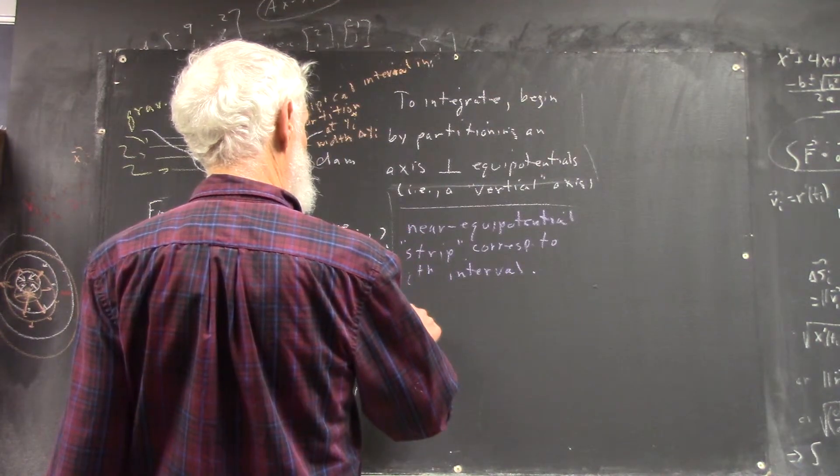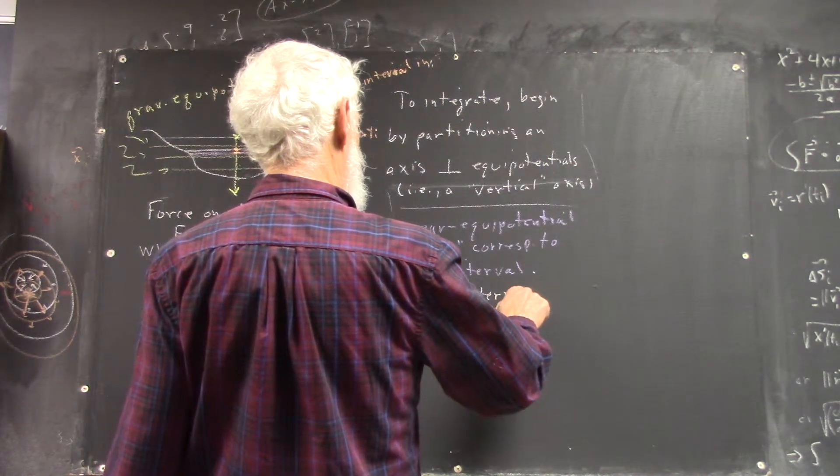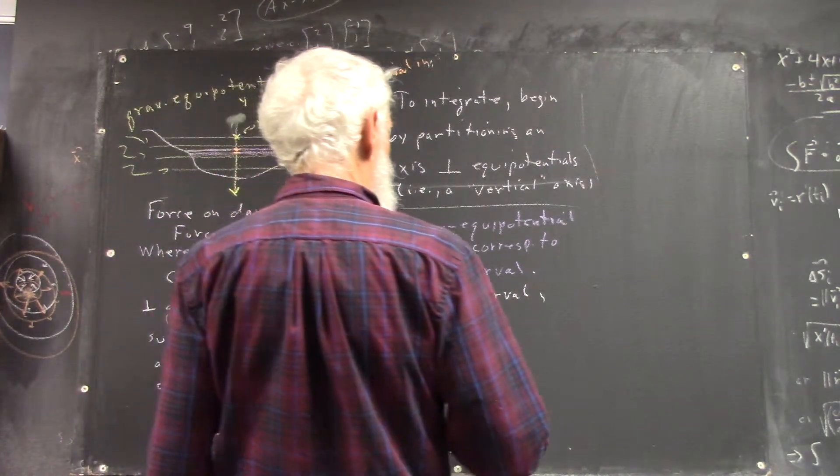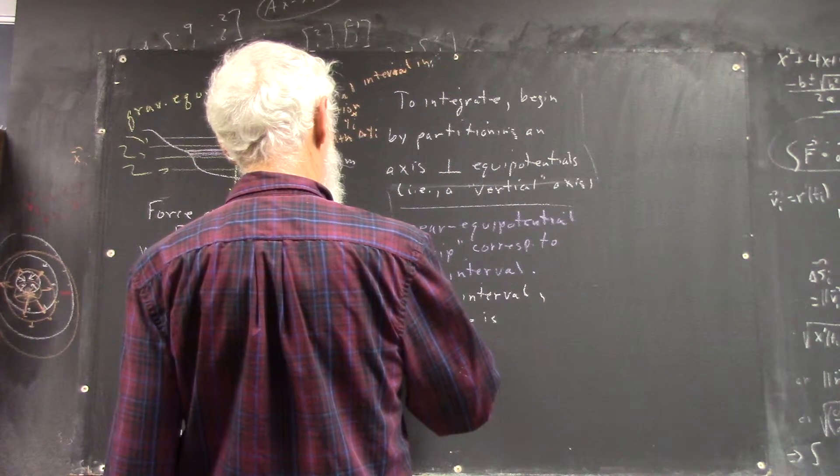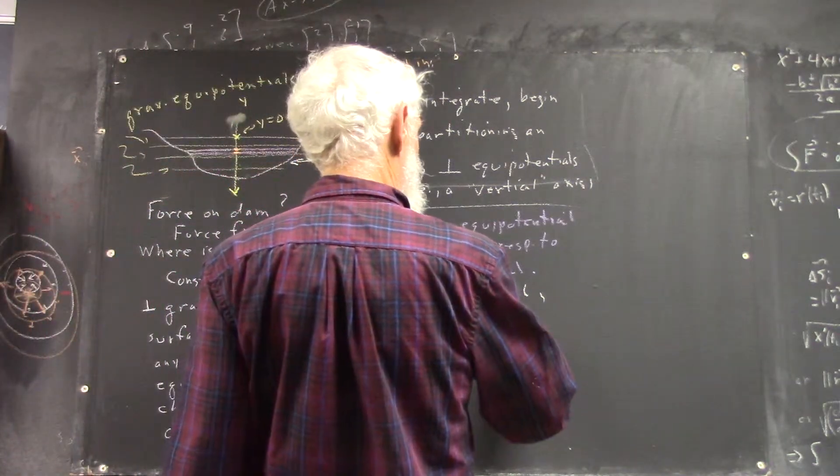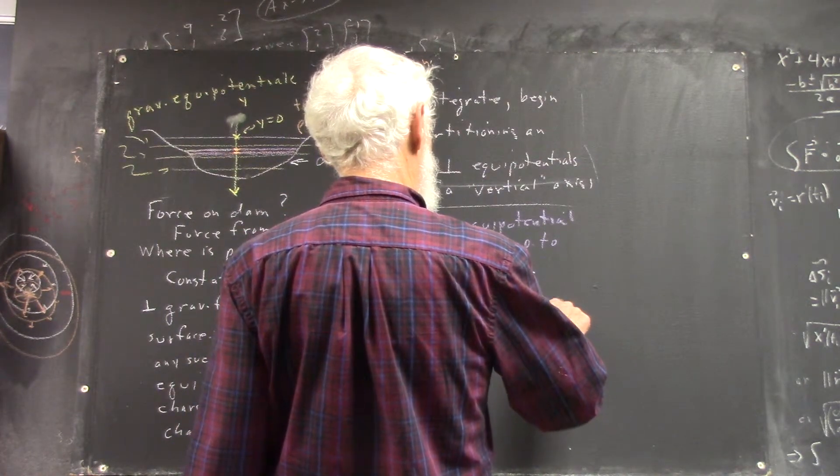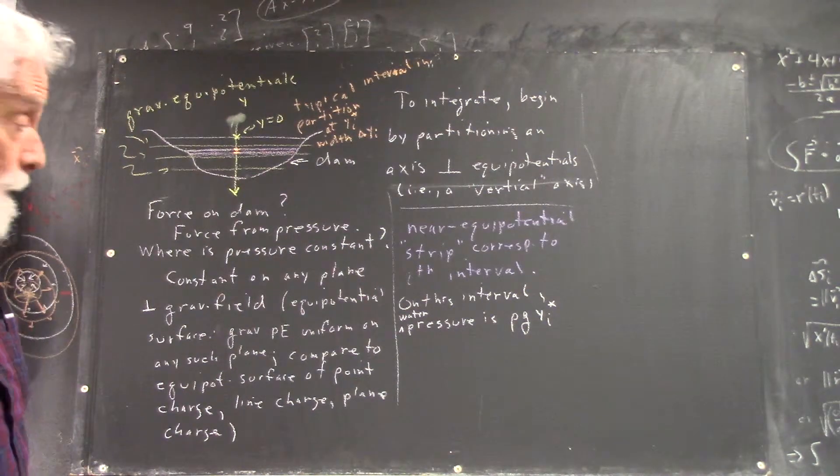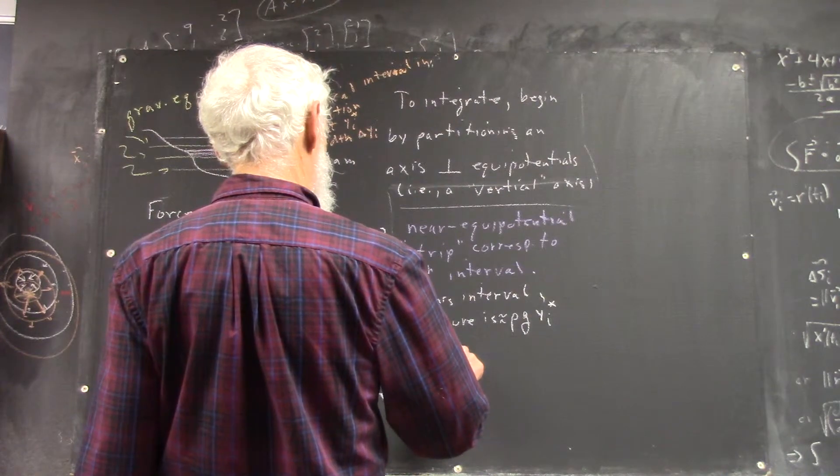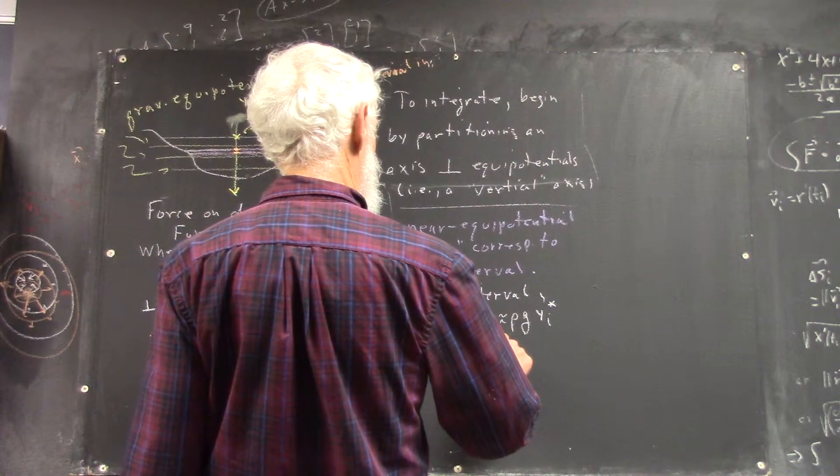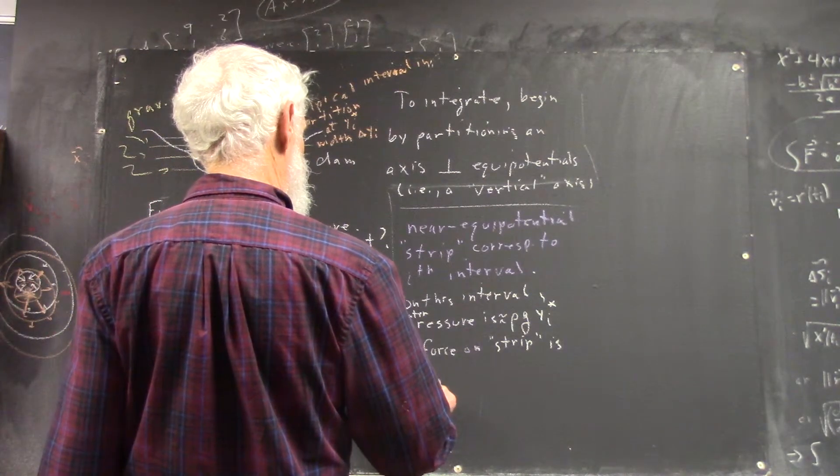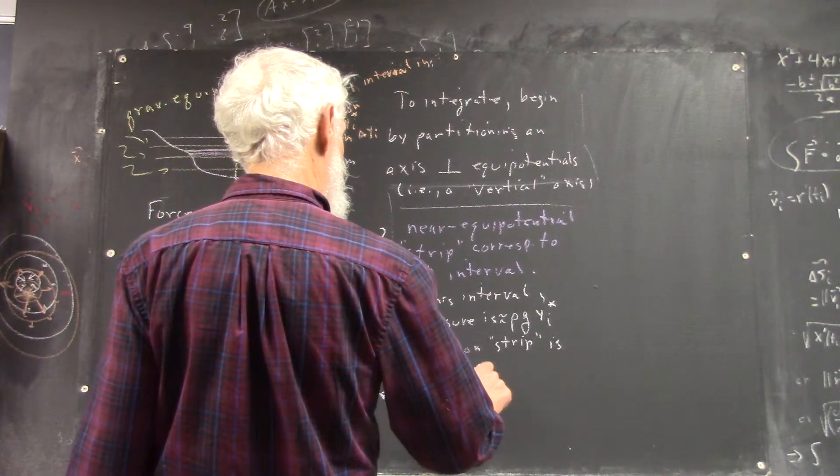So now, on this interval, the pressure, at least the water pressure, this would be a gauge pressure, measured relative to the top of the dam. The water pressure is rho g y_i star, approximate. The force on the strip is area_i times rho g y_i.